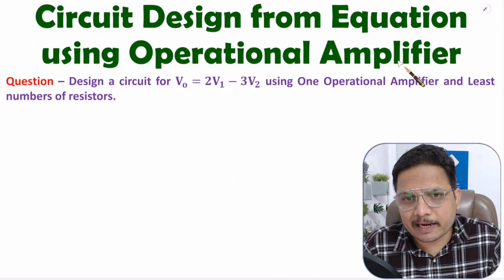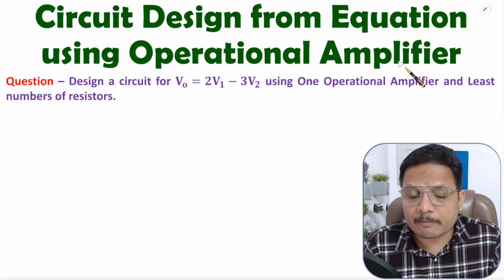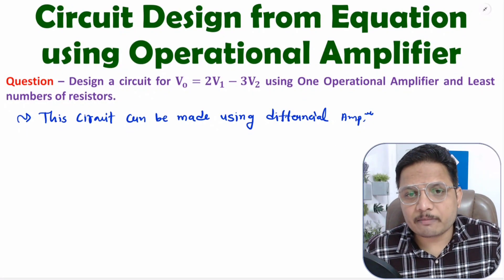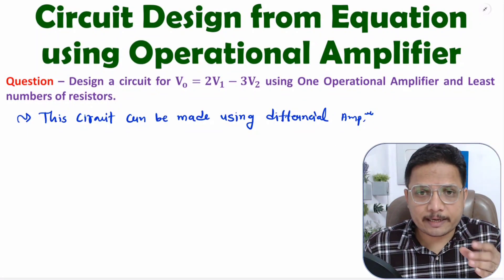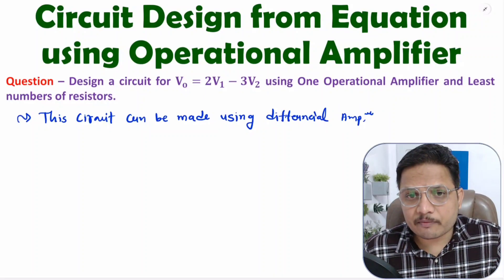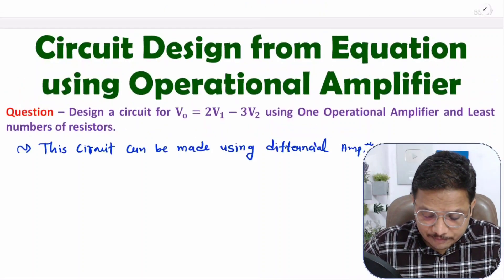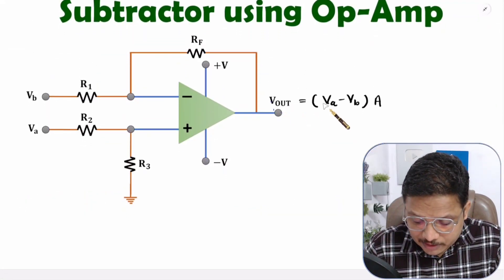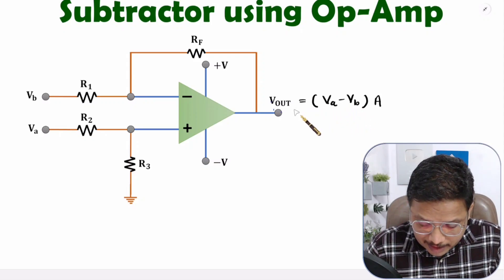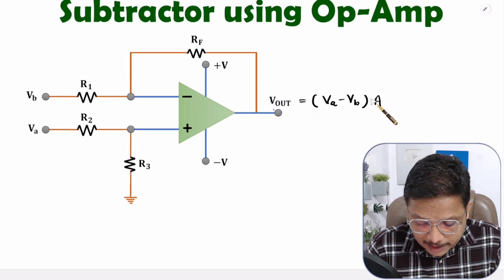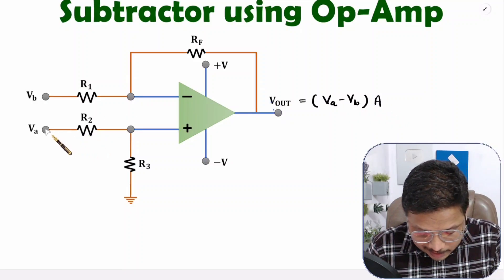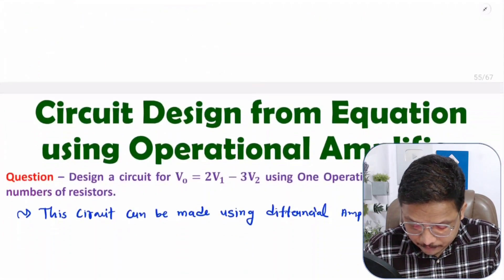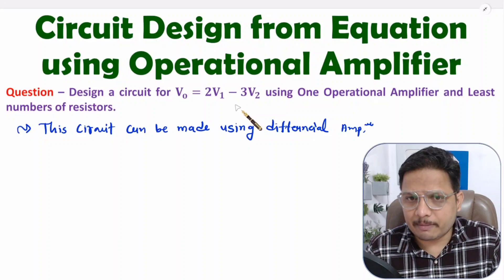As we need to have positive and negative input, here we will be using an operational amplifier with differential configuration. If you have seen my last video, in that I explained a subtractor using operational amplifier with differential configuration. So there my output was based on VA minus VB into gain A. But here if you choose values of resistors with different values, then one can have the output as per 2V1 minus 3V2.